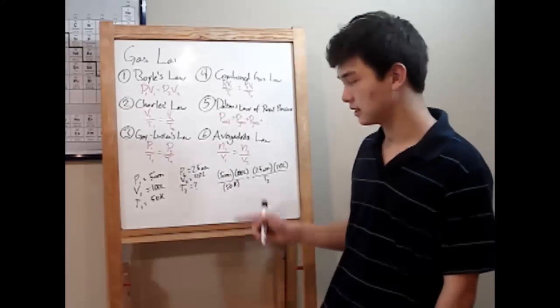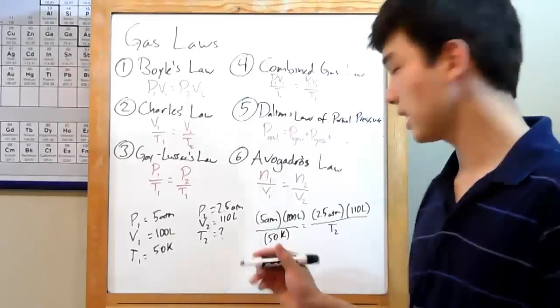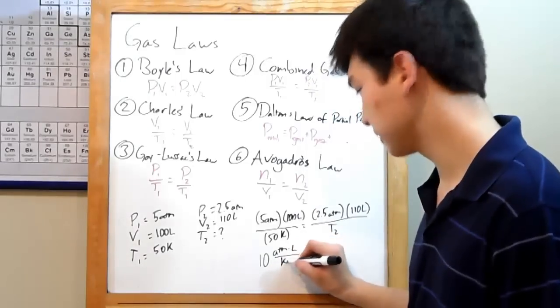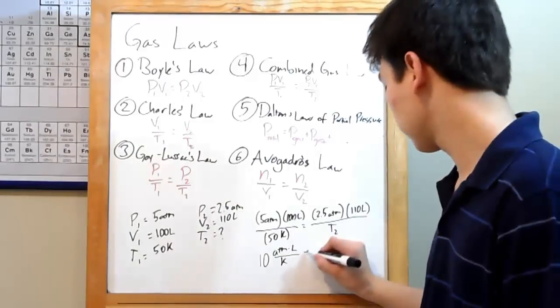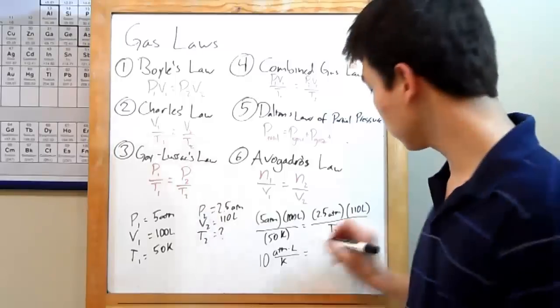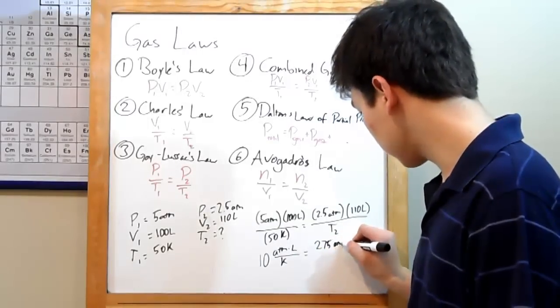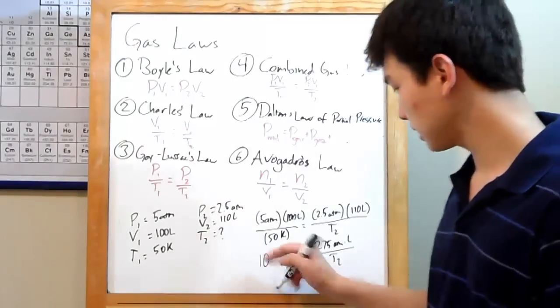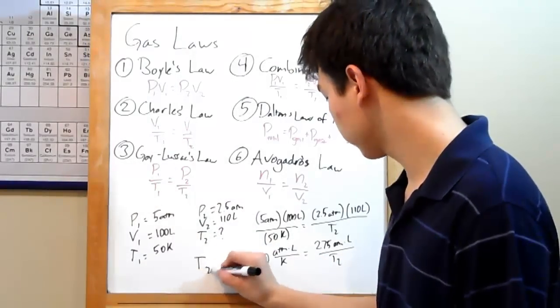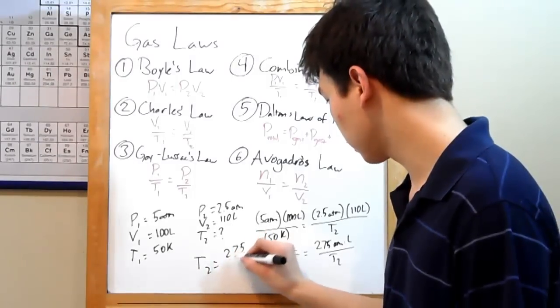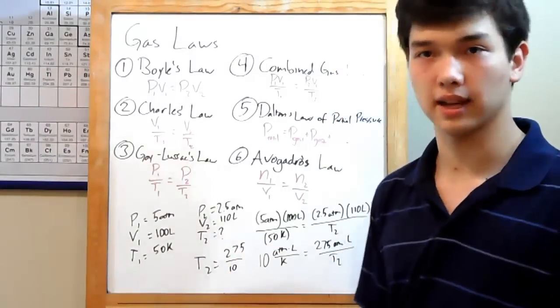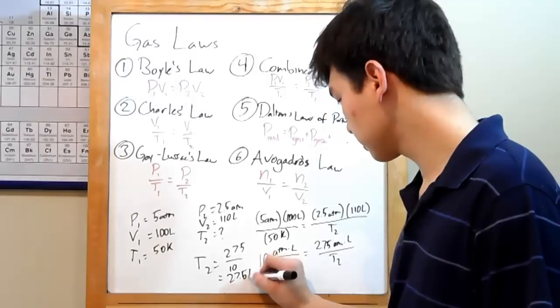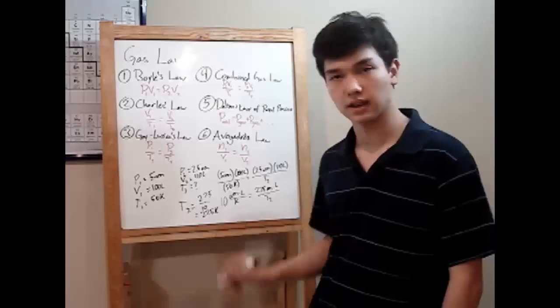So, multiplication and division. 5 times 100 is 500. Divided by 50 is just 10. That was easy enough. Keep your units. I know that atmospheres times liters over kelvins is a little crazy, but it'll all simplify in the end. And over here, 2.5 times 110, that's 275 atmospheres times liters over T2. So now we just need to do a bit of simplification. Bringing T2 over there, you'll find out that T2 is just 275 over 10, which is very simple math. You end up with T2 being 27.5 kelvins. And that's all it took. Plugging in and simplifying.